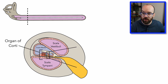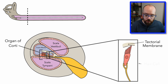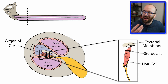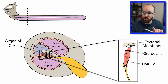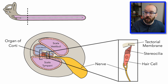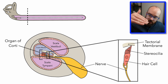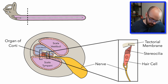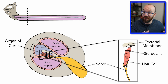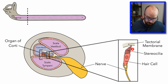Let's zoom in on a hair cell and the tectorial membrane. The hairs on the hair cell aren't really hairs like beard hair — they're cilia called stereocilia sticking off the top of the hair cell. There are multiple stereocilia of different lengths, one of which is up against the tectorial membrane. When the standing wave pushes down on the tectorial membrane, it causes the stereocilia to bend. That bending depolarizes the hair cell and causes a signal in the connected nerve, which travels through the vestibulocochlear nerve to the brain.